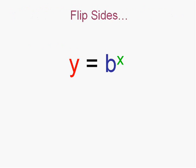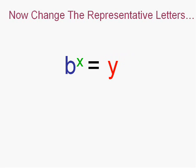Now let's flip the sides, still the same function. And I'm going to change the representative letters to make things a little easier for you. I'm going to make it b to the e equals n, rather than b to the x equals y, and I'll tell you why.